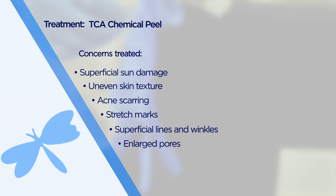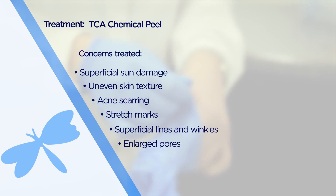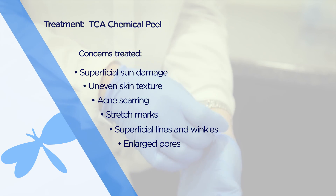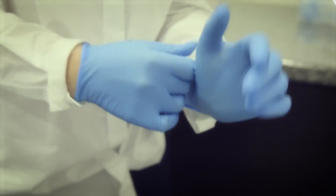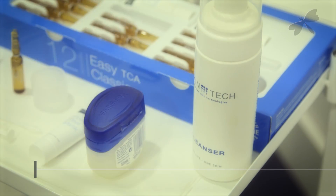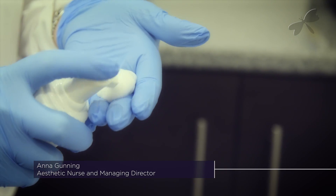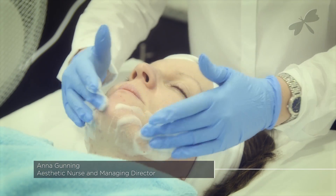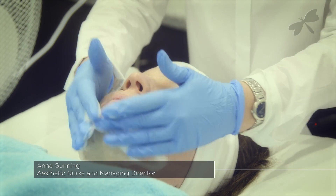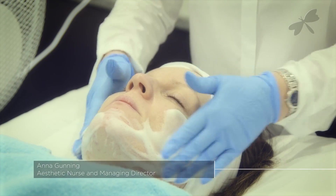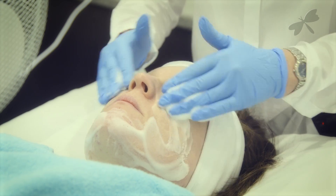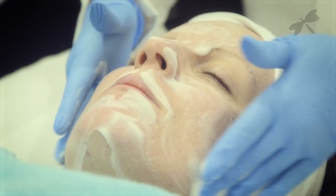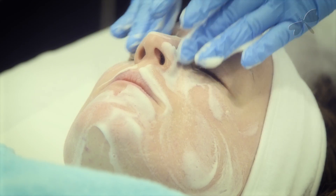Today we'll be demonstrating the TCA chemical peel for the treatment of acne scarring and uneven skin texture. The TCA chemical peel can be used for many other areas such as superficial sun damage, uneven skin texture, stretch marks, superficial lines and wrinkles, and enlarged pores.